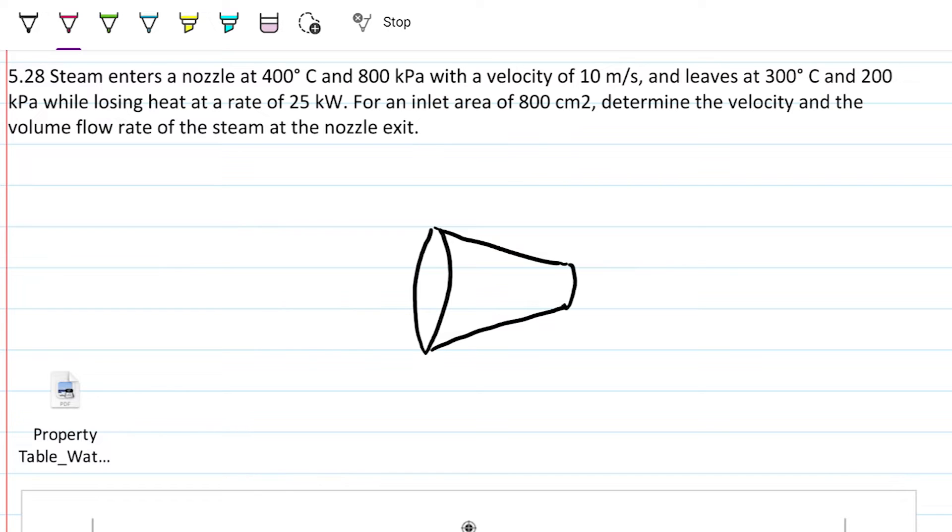So the problem statement reads for problem 5.28: Steam enters a nozzle at 400 degrees Celsius and 800 kilopascals with a velocity of 10 meters per second and leaves at 300 degrees Celsius and 200 kilopascals, while losing heat at a rate of 25 kilowatts. For an inlet area of 800 centimeters squared, determine the velocity and the volume flow rate of the steam at the exit.